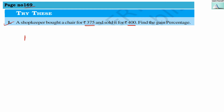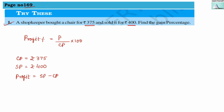We know the formula: profit percentage equals profit divided by cost price, multiplied by 100. The shopkeeper bought the chair for 375, so the cost price is rupees 375. The selling price is rupees 400. From this we can find the profit: selling price minus cost price, so 400 minus 375 gives profit of rupees 25.